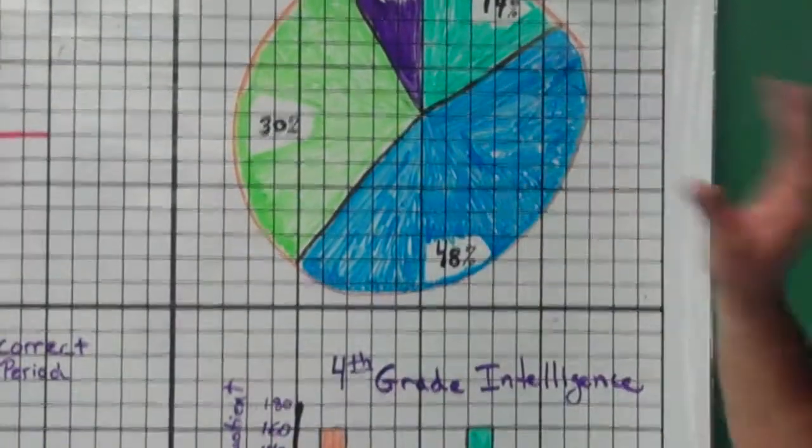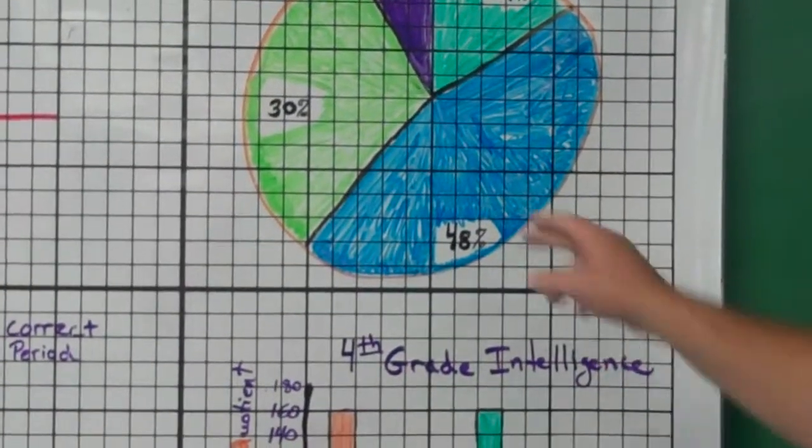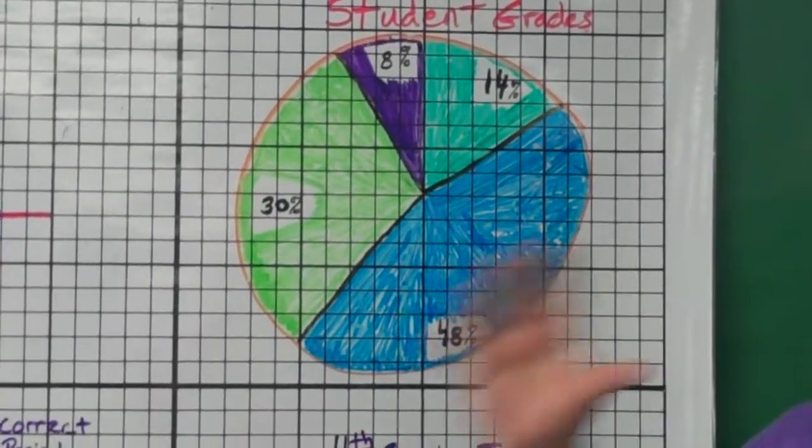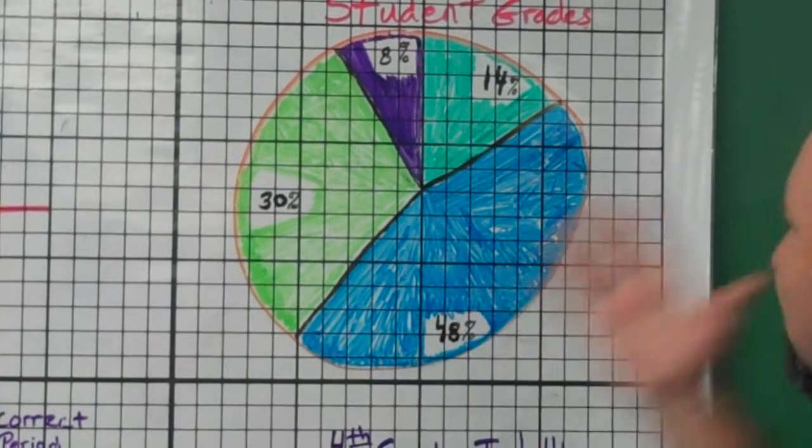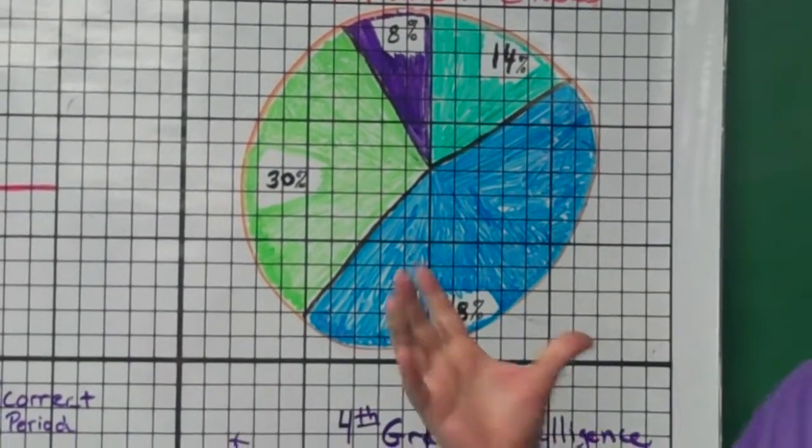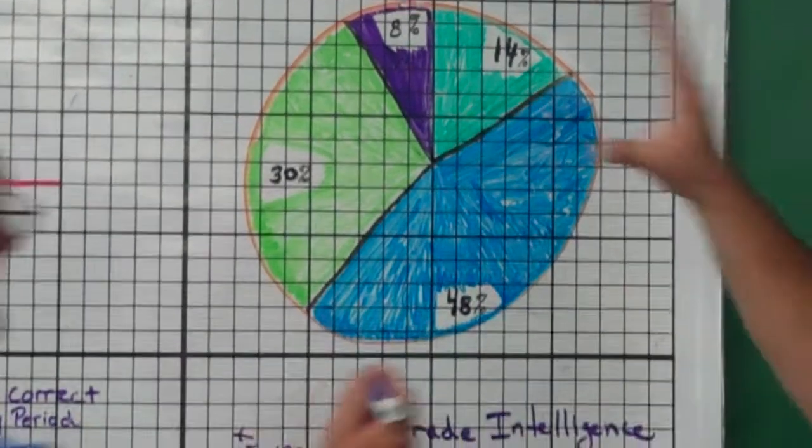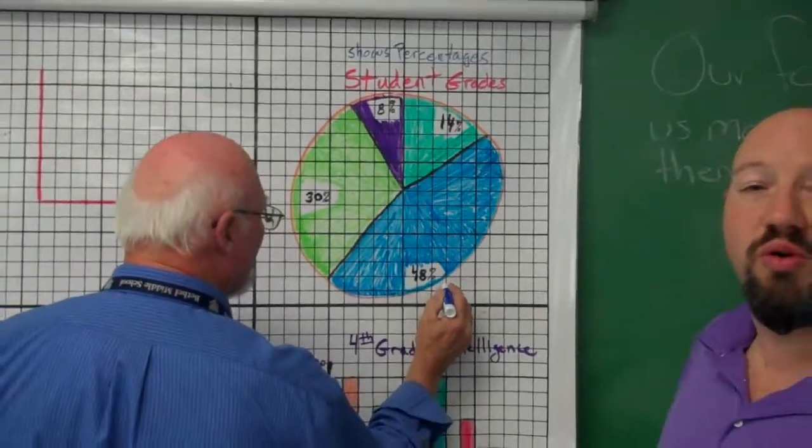See? It's important to have labels. So 48% of what? 30% of what? So without labels, that graph means nothing. So that's one of those things you have to make sure you include.